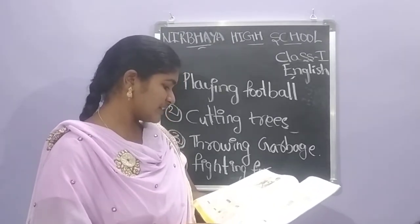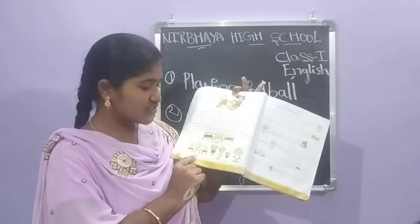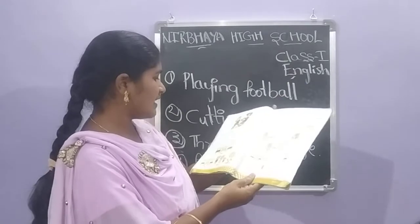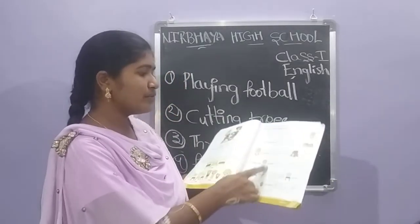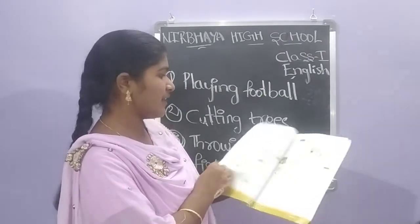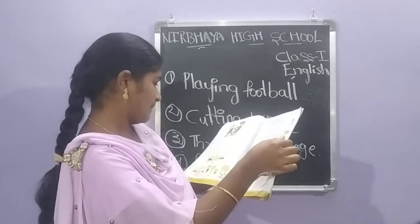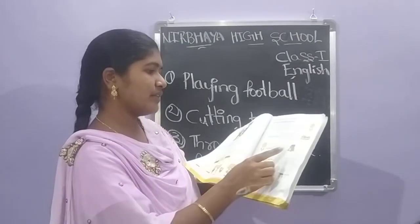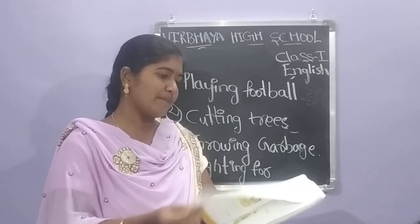Look at the pictures and read the names given below: beds — B-E-D-S, chairs — C-H-A-I-R-S, bears — B-E-A-R-S, and Goldilocks. You have to search for each item in the picture and write the name. For example, here is Goldilocks, here is a forest, and here is a house. Try this and read these pages.